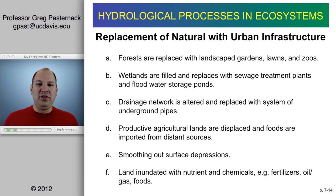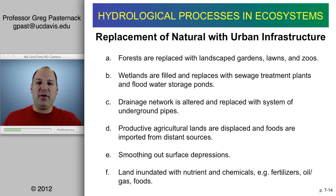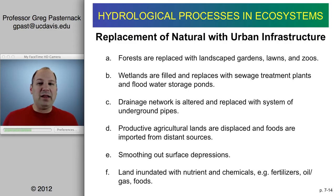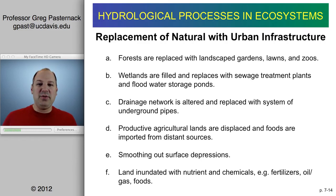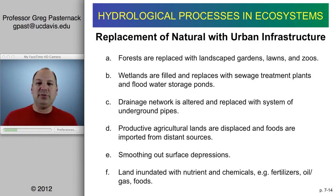There were three main driving factors underlying the changes to urban infrastructure. First, human health and sanitation: wetlands were associated with malaria and were also seen as good farmland. As high densities of people lived together, sanitation problems required sewer systems. So human health and sanitation was one big factor.